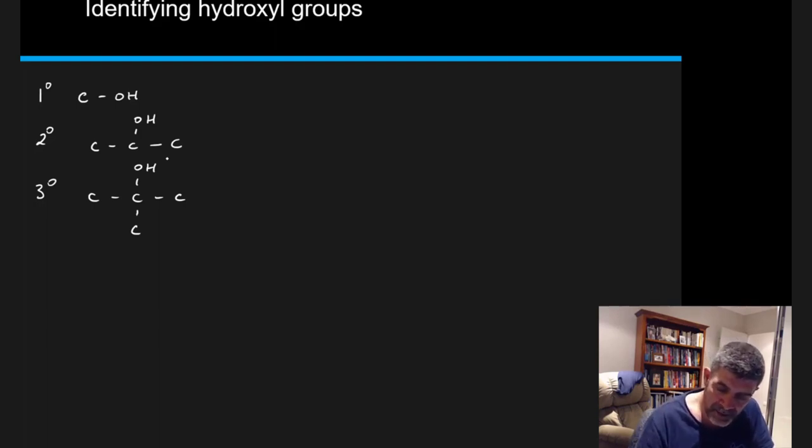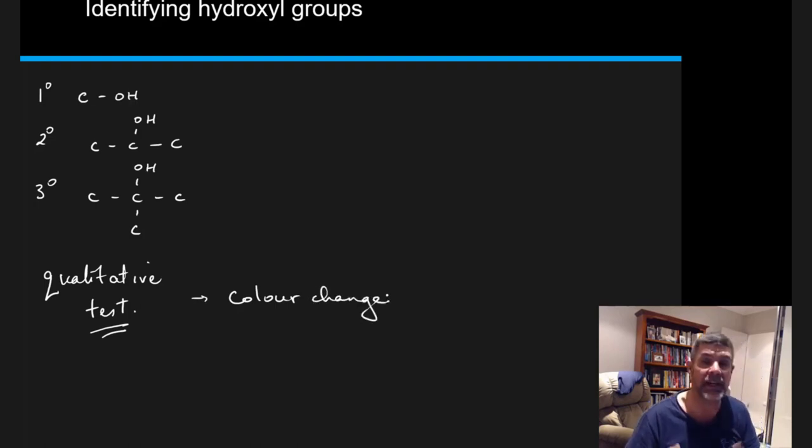So because this is a qualitative test, we just need to identify the position of the hydroxyl group. So the best way of doing that is to use something where we have a color change. That is, if a reaction occurs, we can actually see that reaction has occurred by identifying a change in color.